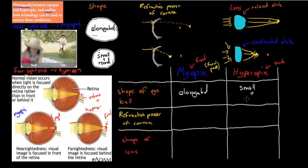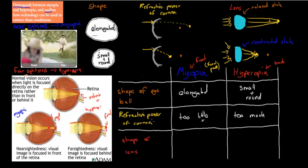For the refractive power of the cornea: if the refractive power is too little — not enough bending — then we get myopia, meaning the focal point is too far in front. If there is too much bending happening at the cornea, we get hyperopia. If there's not enough bending, we get myopia.